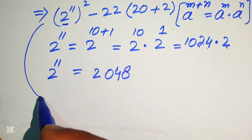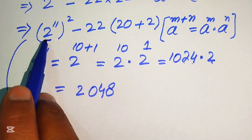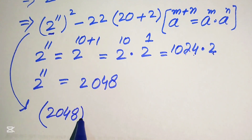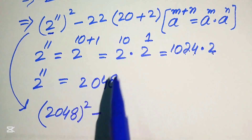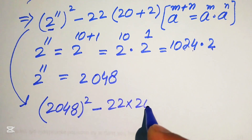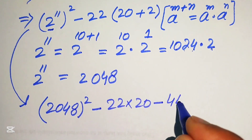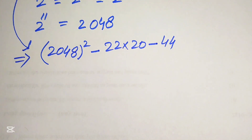Now we replace this value in the expression. We have (2048) whole squared minus 22 distributed over both terms: 22 multiplied by 20 minus 22 times 2, which becomes 440 minus 44.